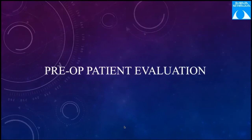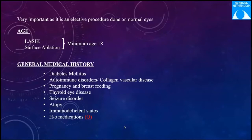The pre-op patient evaluation is the most important part, because laser vision correction is an elective procedure done on normal eyes. The FDA-approved minimum age for laser vision correction is 18 years. First, coming to general medical history, diabetes mellitus is the first consideration.